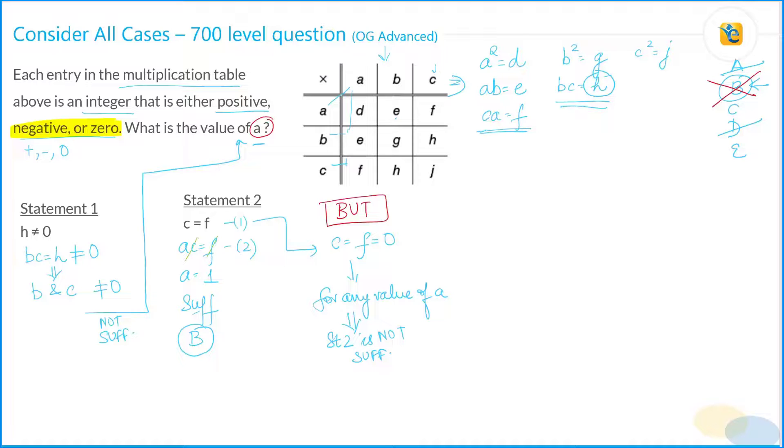So one thing I want you to realize before I finish off the solution is what has happened here. Because you didn't consider all the possible cases, and in this case the possible case was c is equal to f is equal to zero, which was given to you in the question statement. And in fact, even if this was not given to you, the very fact that it's an integer means the integer puts the conceptual constraint on each of the values that they can be positive, negative, or zero.